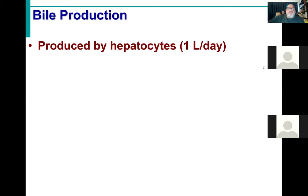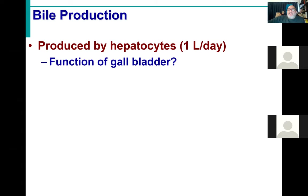The last function of the liver involves bile production. Depending on diet, hepatocytes produce about one liter of bile during the course of a day. That doesn't mean one liter is released into the alimentary canal — much of it is stored and concentrated in the gallbladder. The gallbladder not only stores bile but withdraws water from it, concentrating it up to ten times its original concentration.